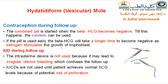Regarding contraception during follow-up, the best option is the combined contraceptive pill, but this must only be used when beta-hCG becomes negative. Until that time, the patient can use condoms. The pill must not be used early, because estrogen in the pill will stimulate the growth of trophoblast and the beta-hCG will take longer to become negative. IUD cannot be used during this period, because it may cause irregular uterine bleeding that would confuse the follow-up. Also, IUD insertion after evacuation of molar pregnancy can be traumatic, with a risk of perforation since the uterus is fragile after this type of pregnancy. Therefore, IUD is contraindicated.